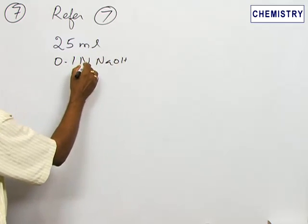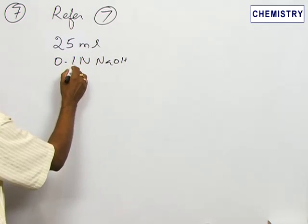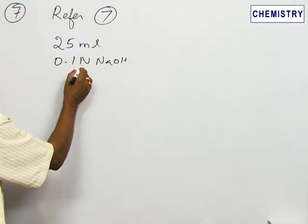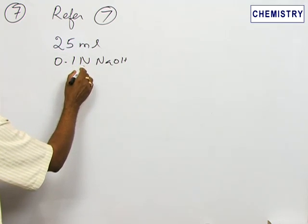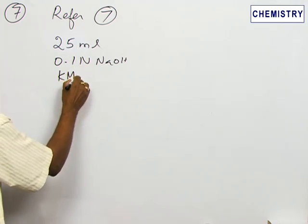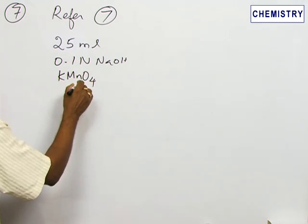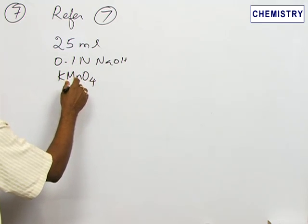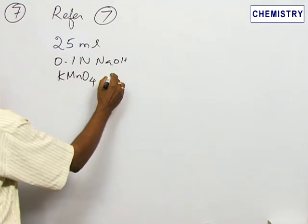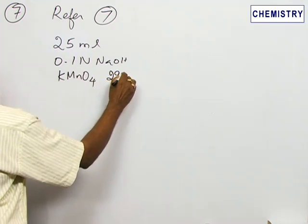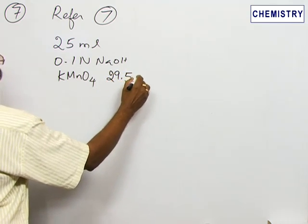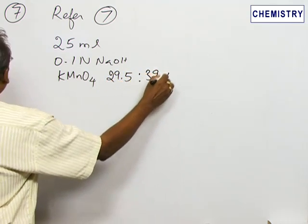25 ml is used in both experiments with 0.1 N sodium hydroxide. 0.1 normality means 0.1 gram per equivalent. This is a normal concentration term used in volumetric analysis. Potassium permanganate was used as the titrant and the volume is in the ratio 29.5 is to 39.4.